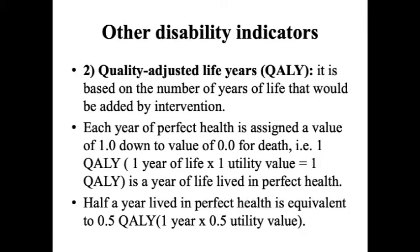Quality Adjusted Life Years (QALY) is based on the number of years of life that would be added by an intervention. Each year of perfect health is assigned a value of one, down to a value of zero for death. One QALY equals one year of life multiplied by one utility value, which equals one year lived in perfect health. Half a year lived in perfect health is equivalent to 0.5 QALY — that is, one year multiplied by 0.5 utility value.